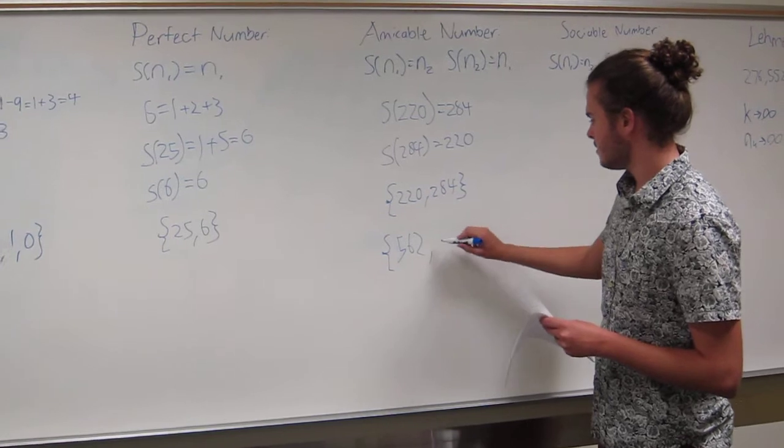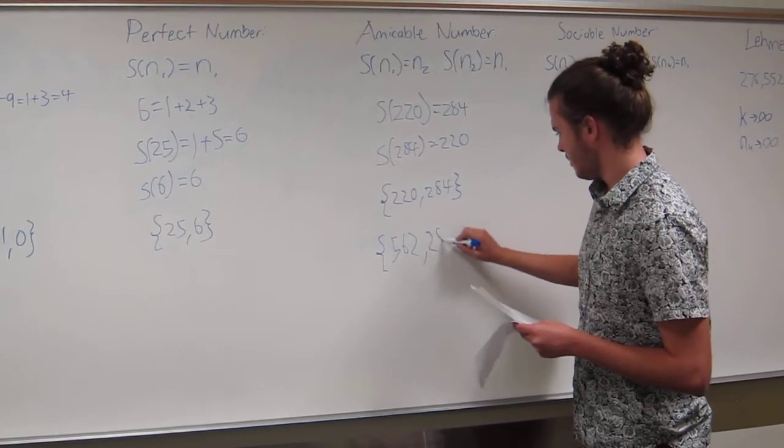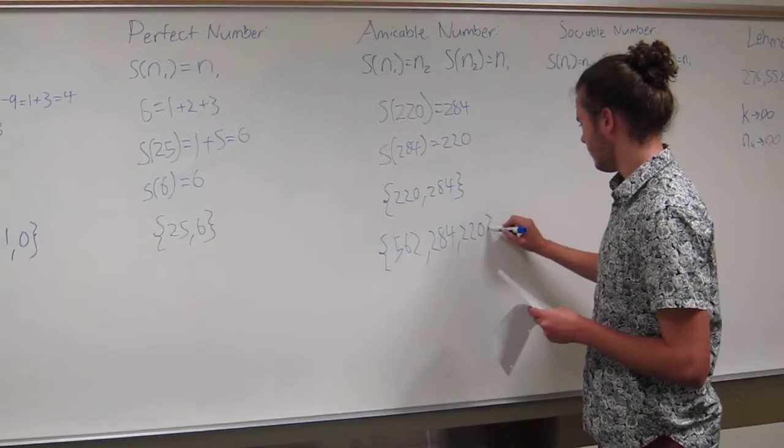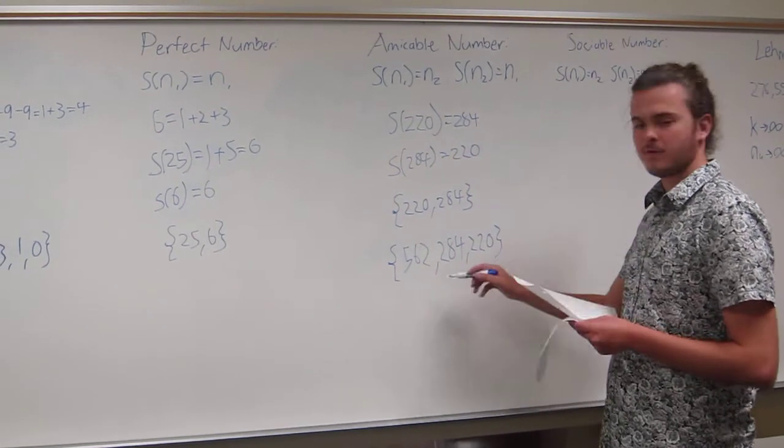Then the sum of the proper divisors of 562 is 284. And you have 220. You know that the sum of the proper divisors of 220 is 284, so you know it's done there.